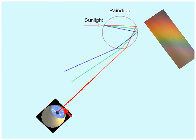So if a raindrop is high up above you, and you're looking at it this way, you'll see the red light coming out of it, and that raindrop will look red to you.